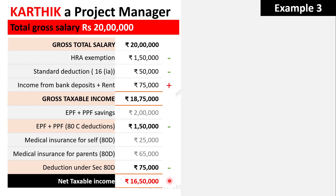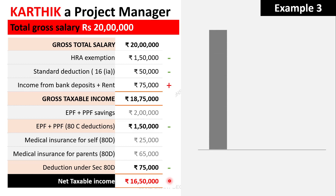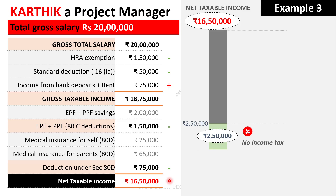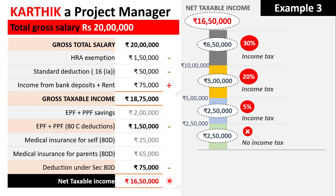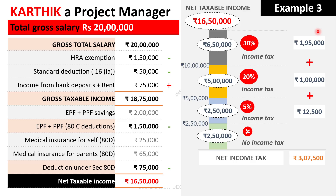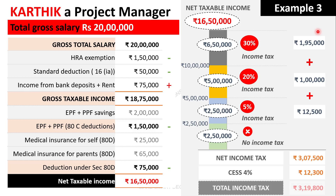Karthik's net taxable income becomes sixteen lakh fifty thousand — eighteen lakh seventy-five thousand minus one lakh fifty thousand minus seventy-five thousand. Computing income tax across four slabs: first 2.5 lakhs at zero; next 2.5 lakhs at five percent equals twelve thousand five hundred; five to ten lakhs at twenty percent equals one lakh; above ten lakhs — six lakh fifty thousand at thirty percent equals one lakh ninety-five thousand. Total income tax is three lakh seven thousand five hundred. Adding a cess of four percent, the final income tax for Karthik is three lakh nineteen thousand eight hundred rupees.